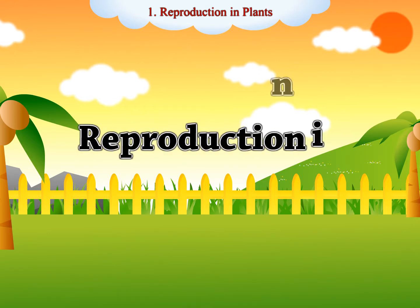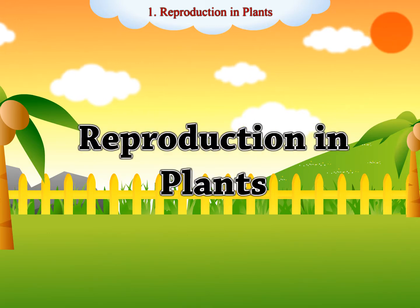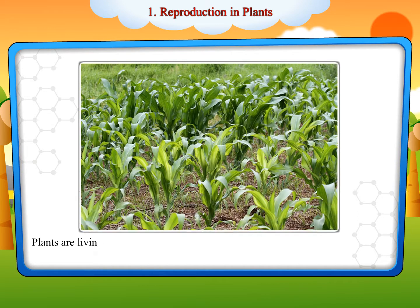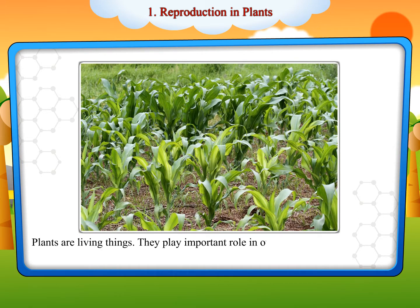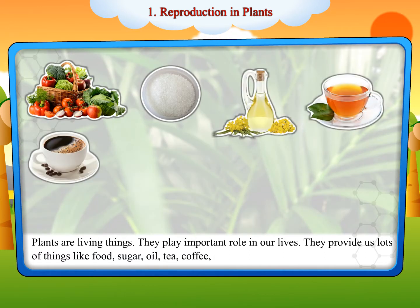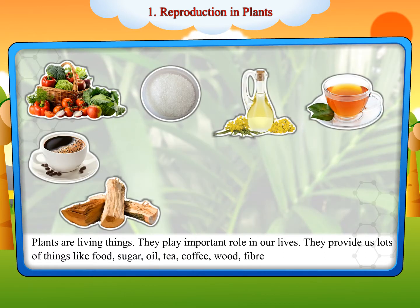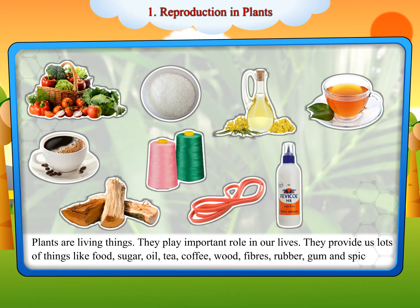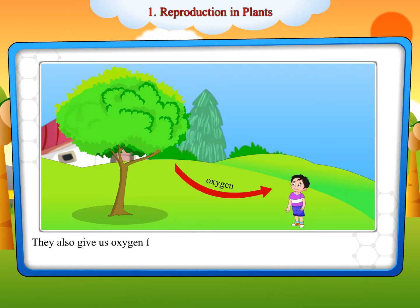Chapter 1: Reproduction in Plants. Plants are living things. They play an important role in our lives. They provide us lots of things like food, sugar, oil, tea, coffee, wood, fibers, rubber, gum and spices. They also give us oxygen for breathing.